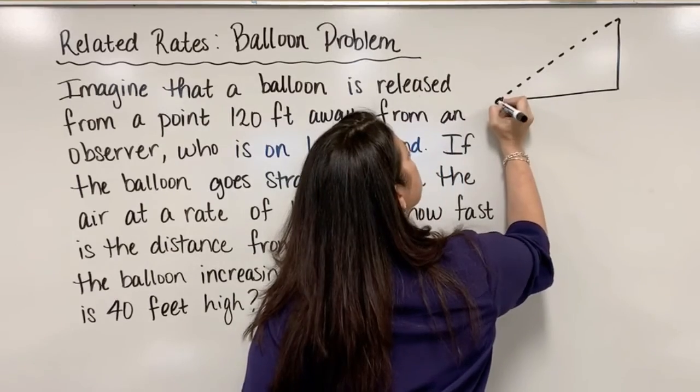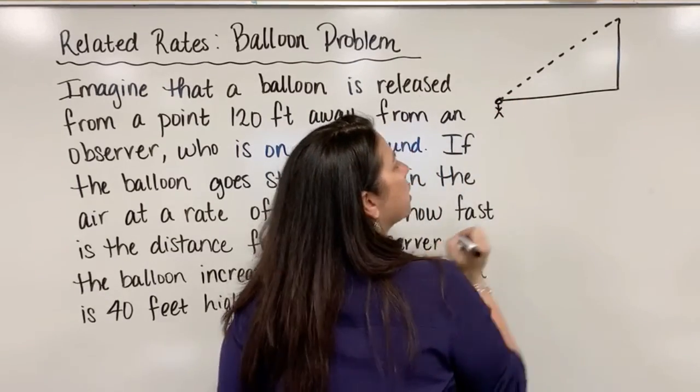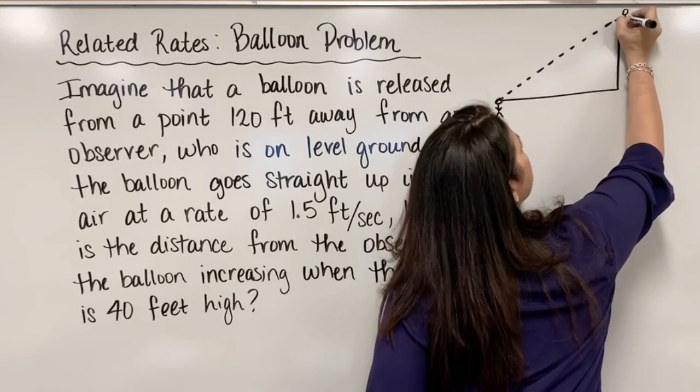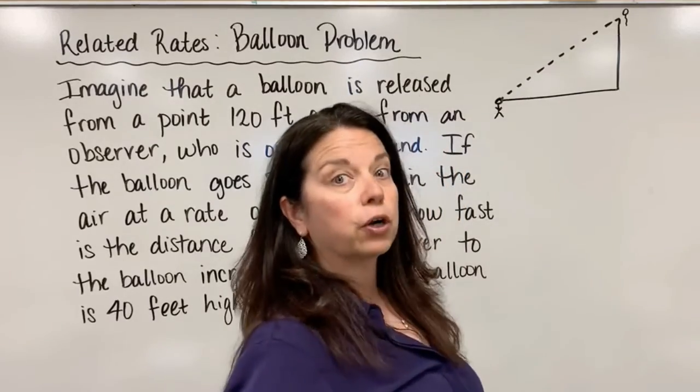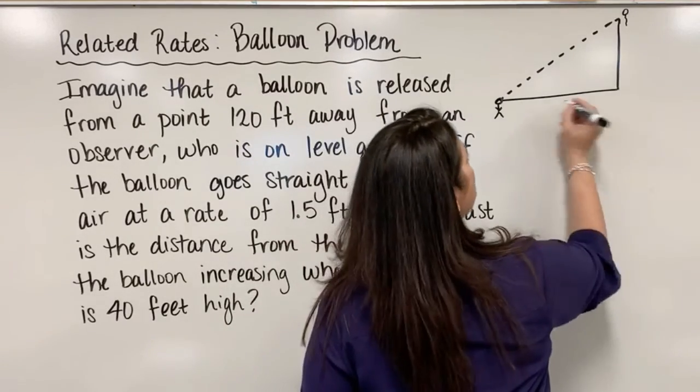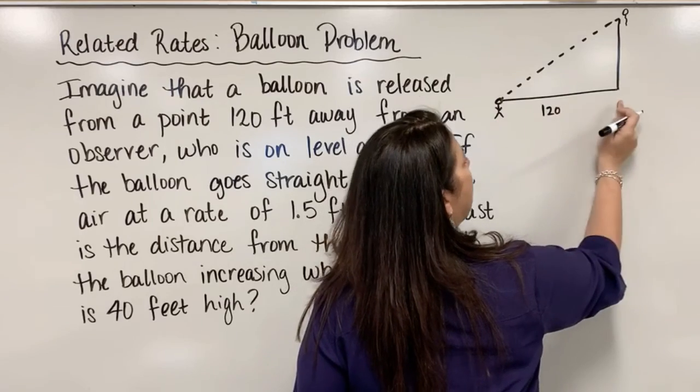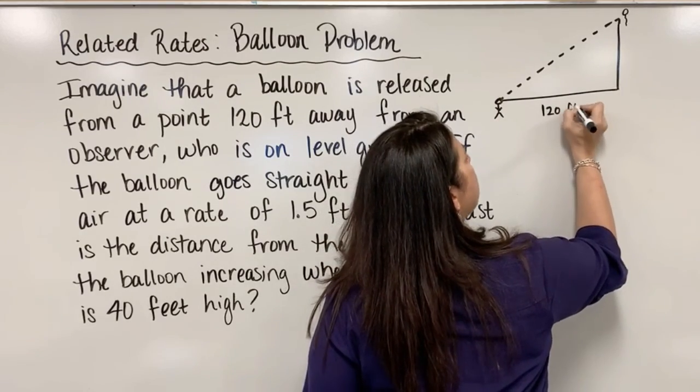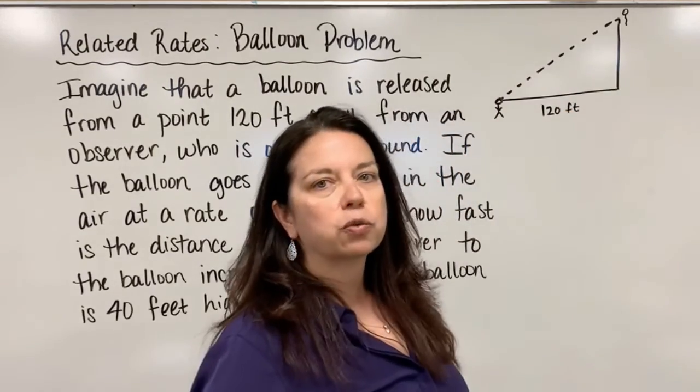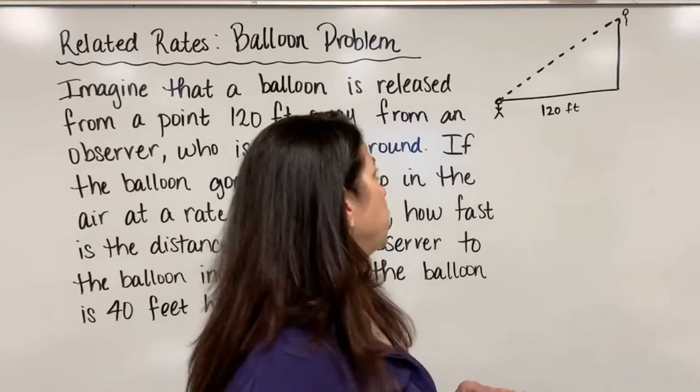What we saw was we had an observer here and a balloon that was rising straight up in the air vertically, and we know that this distance between observer and where the balloon was launched is a static 120 feet. That quantity is not changing.